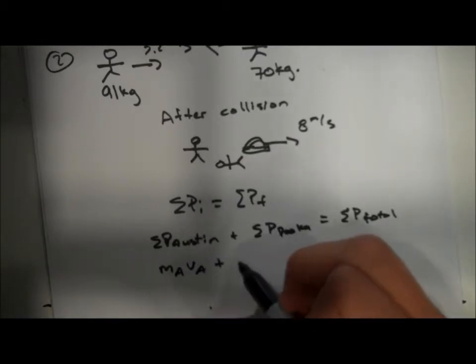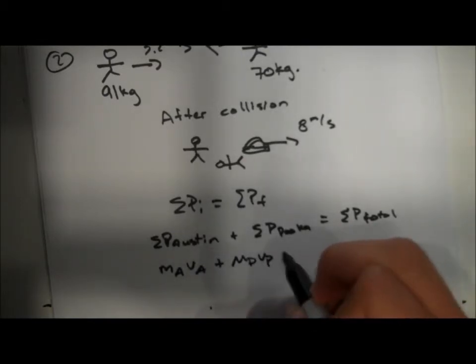So mAvA will equal Austin, which is mass times velocity, and we're going to be making sure we do the same ones for all the other components in the equation.